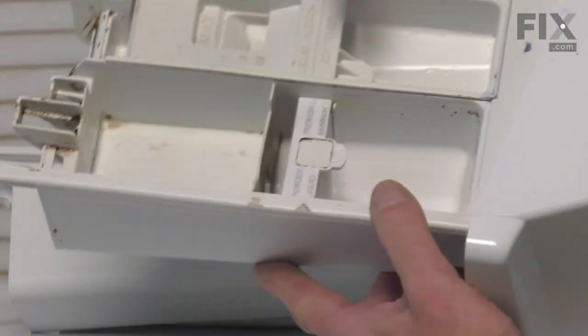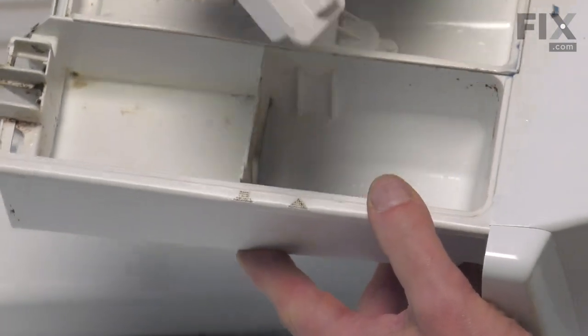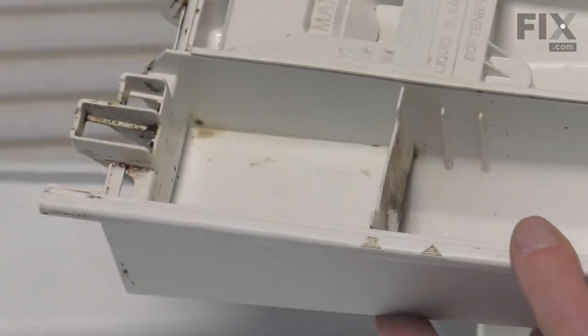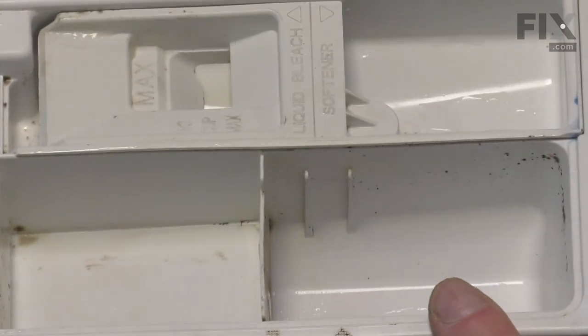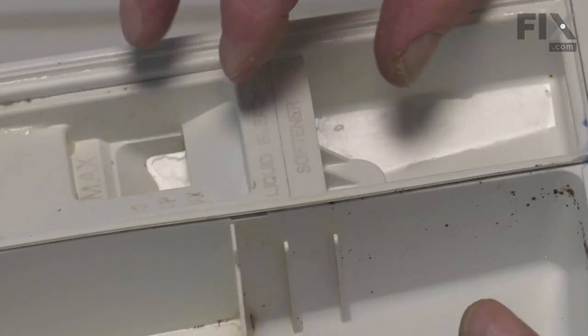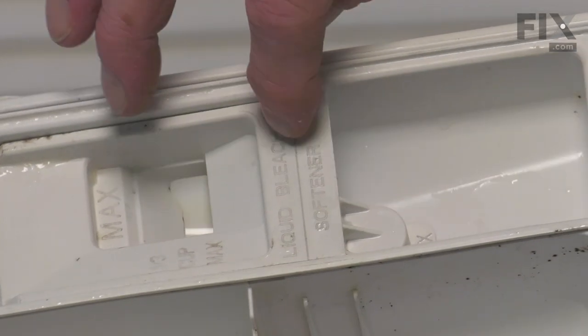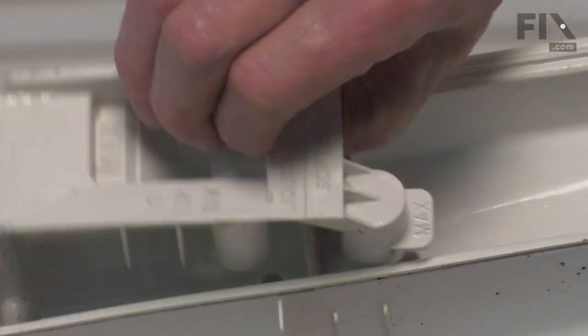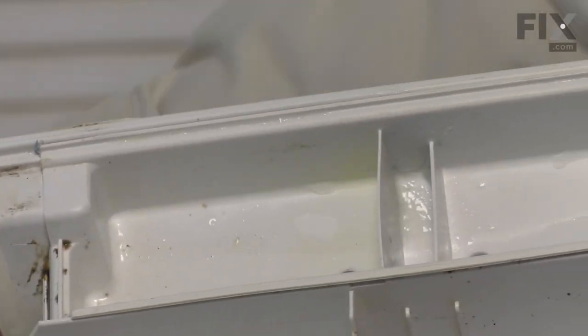Our next step will be to remove that divider on the soap compartment. We'll reuse that in the new drawer. You can also lift out the bleach and softener siphon assembly and we'll set that aside.